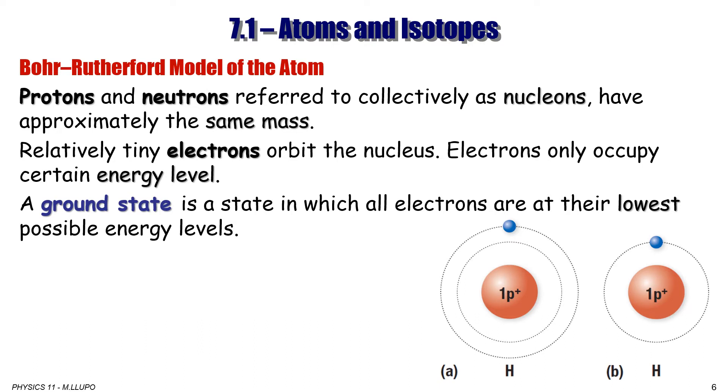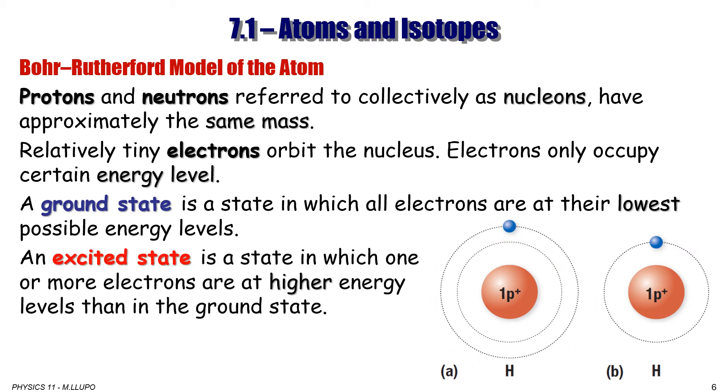A ground state is a state in which all electrons are in their lowest possible energy levels. And here is an example: for hydrogen, which has only one electron, when in the first energy level that occupies up to two electrons, this state is called ground state because it is on the first energy level. On a different diagram, on the left, you see that hydrogen electron jumped already on the second energy level. So that is an excited state, because it's a state in which one or more electrons are at a higher energy level than in a ground state level.